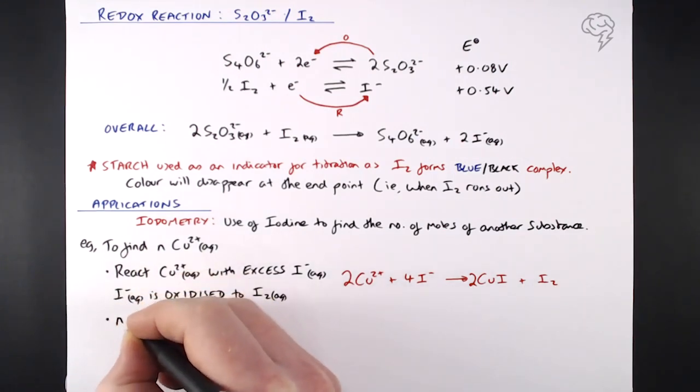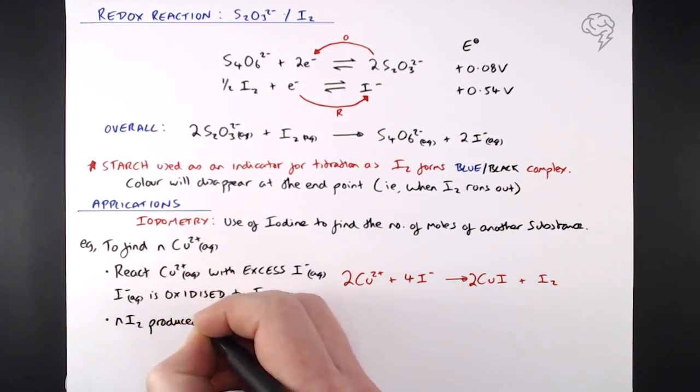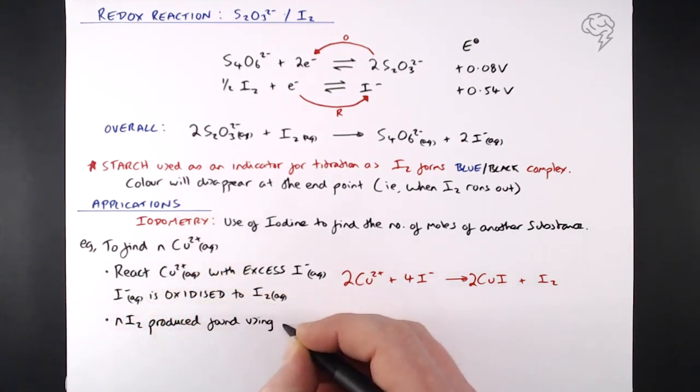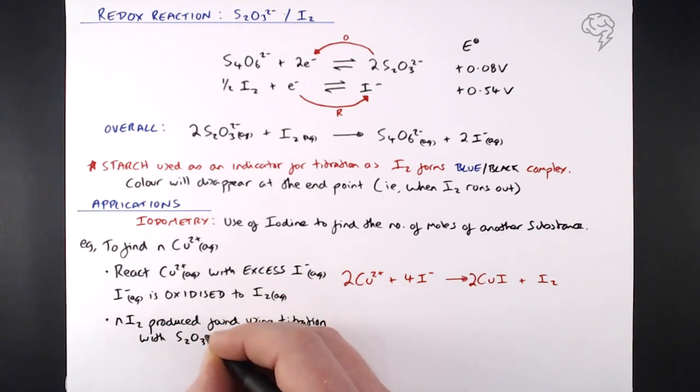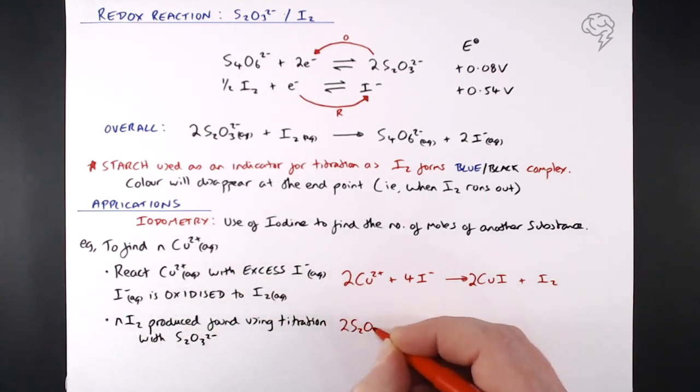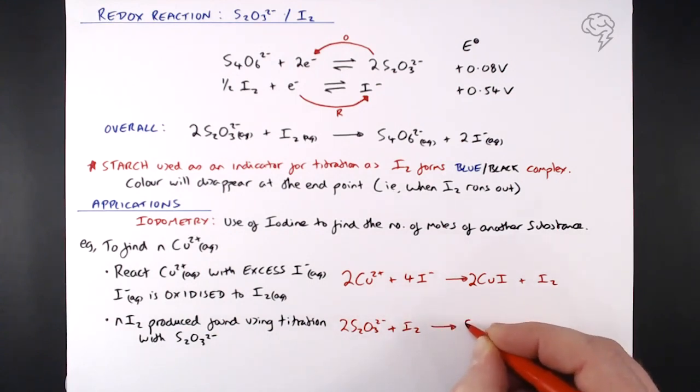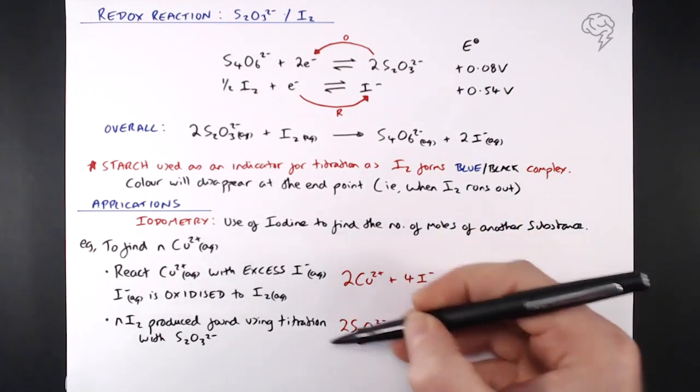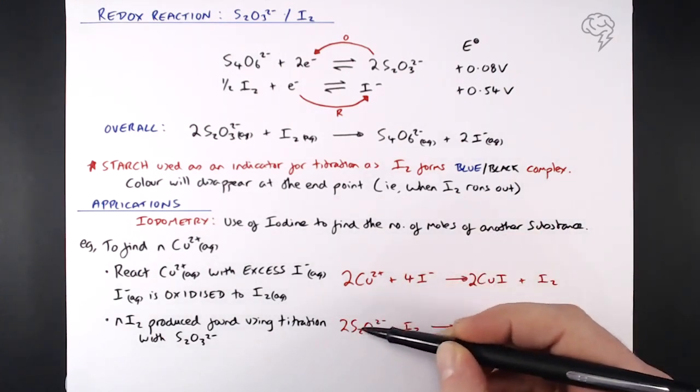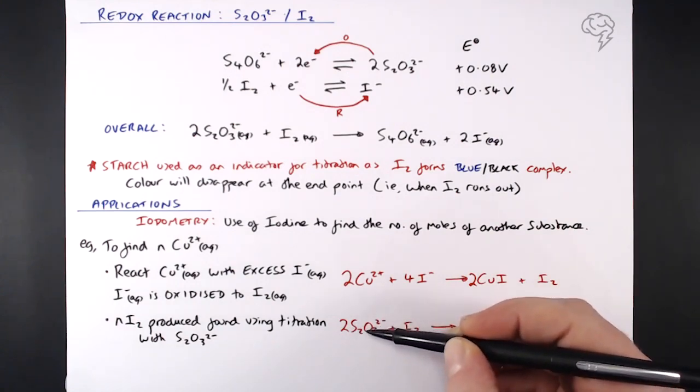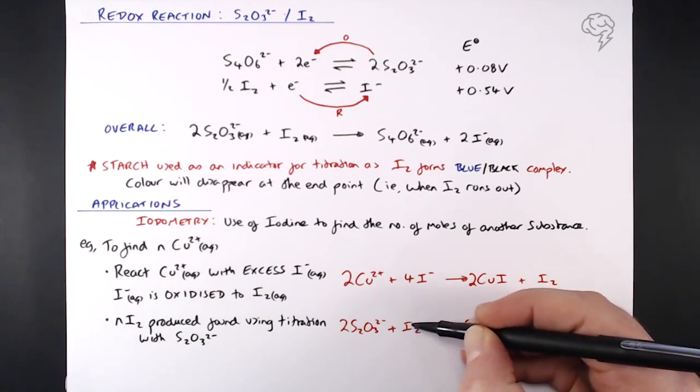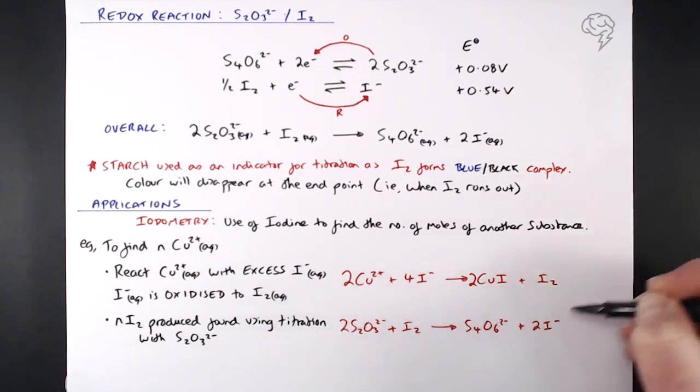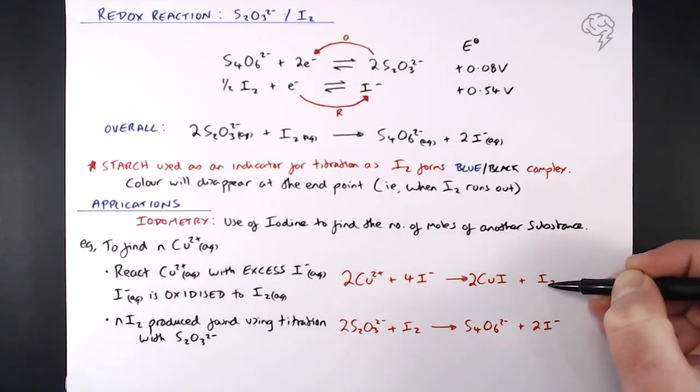After that initial reaction, then the number of moles of iodine that we've just produced is found using the titration with S2O3 2-, like what we've just described above using the starch and so on and so forth. So that reaction there is, as we've written at the top, 2 S2O3 2- plus iodine gives S4O6 2- and two iodide ions. Now, what we can do is we can work backwards. Once we've done this titration, if we know the number of moles of S2O3 that we've used coming out of our burette, then we know by stoichiometry how many moles of iodine is present in our conical flask. Now, if we know how many moles of iodine is present,